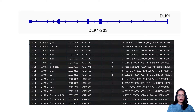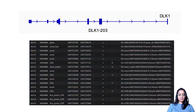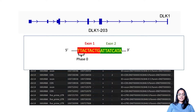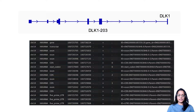Column 7 is strand, indicating whether the annotation is on the forward or reverse strand, represented by plus or minus respectively. Column 8 is phase: for CDS features, the phase indicates where the feature begins and can take values of 0, 1, or 2. Phase 0 means a codon begins on the first nucleotide of the CDS, phase 1 means it begins at the second nucleotide, and phase 2 means it begins at the third nucleotide.